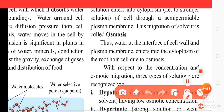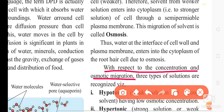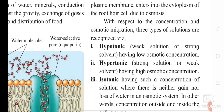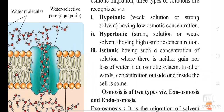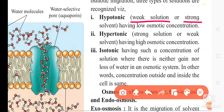With respect to concentration and osmotic migration, three types of solutions are recognized. The first type is hypotonic solution, the second type is hypertonic solution, and the third type is isotonic solution. Hypotonic solution is called the weak solution or strong solvent because it contains a very small amount of solutes. The solvent is strong and the solution is weak, and hypotonic solution has low osmotic concentration.